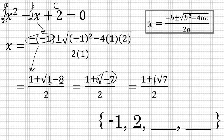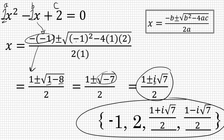And here we have our two solutions: 1 plus i root 7 over 2, and 1 minus i root 7 over 2 are the final two solutions to the original equation. Our original fourth-degree equation has four solutions. Negative 1 and 2 were given. We found the other two, 1 plus i root 7 over 2, and 1 minus i root 7 over 2.